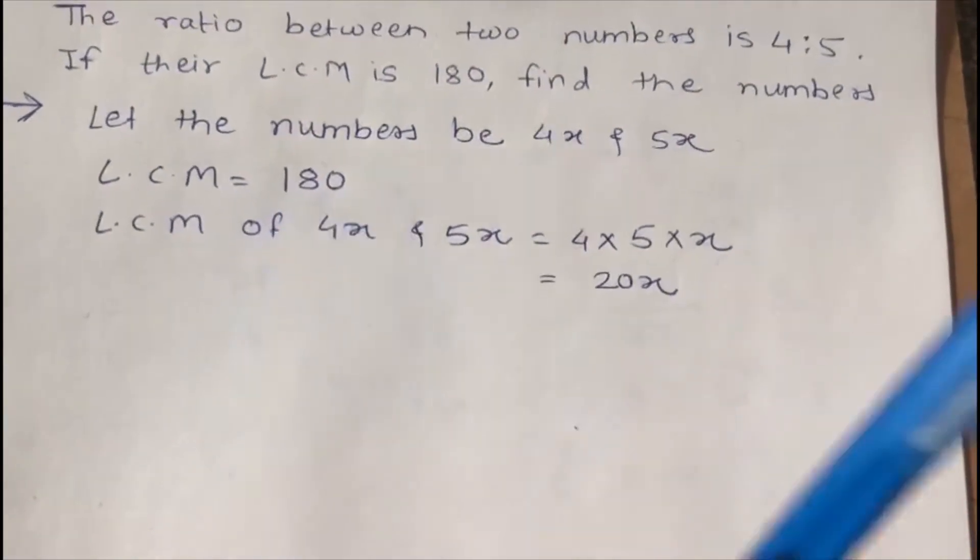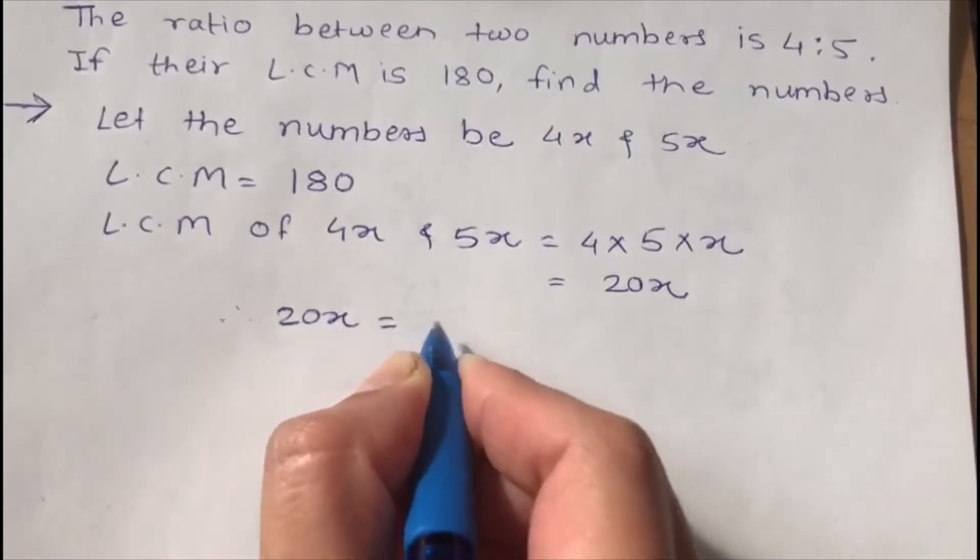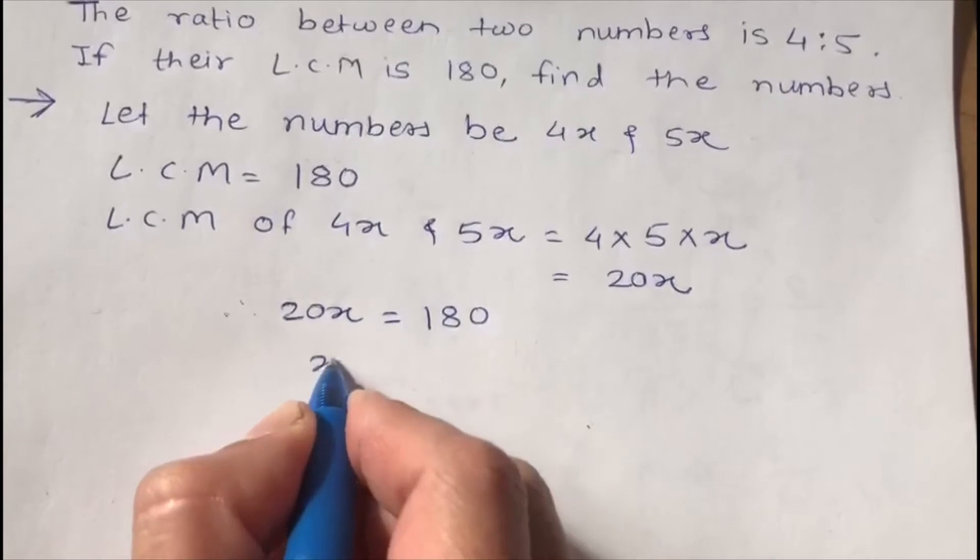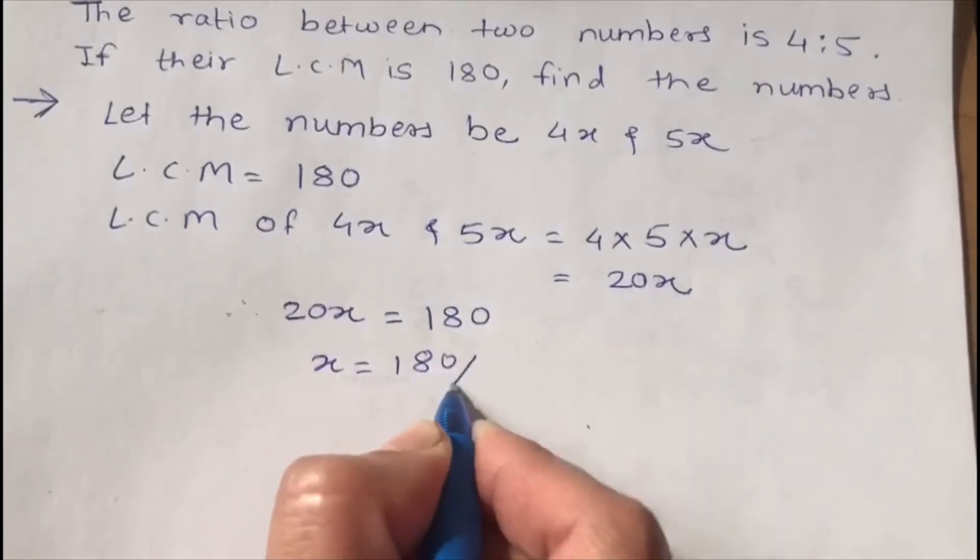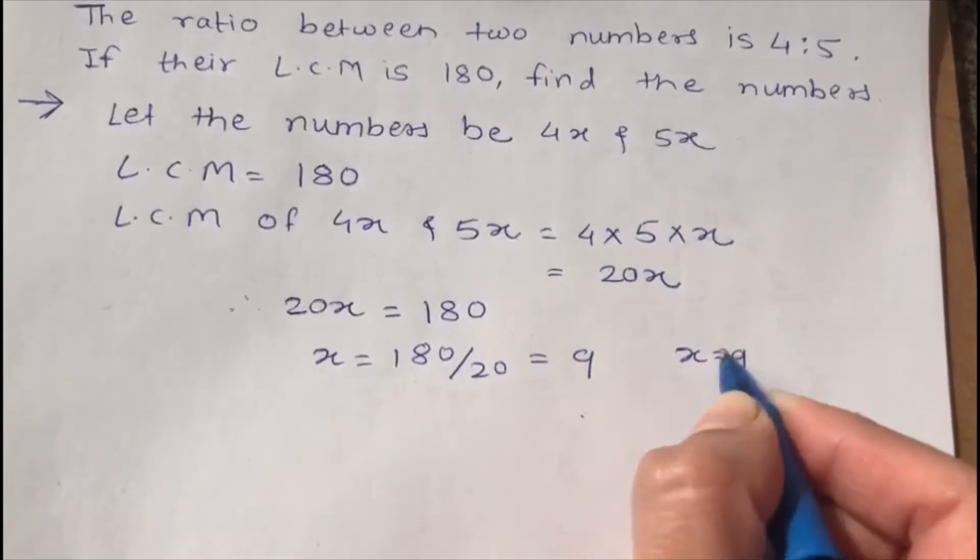And the LCM is 180, so 20x, that means 20x equals 180. So when we divide 180 by 20, it gives us 9. So we know the value of x which is 9.